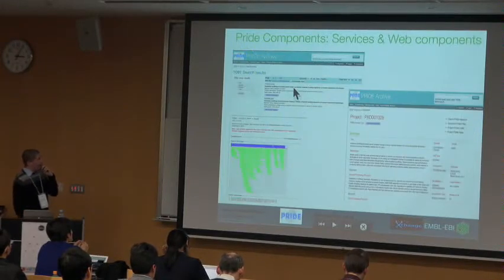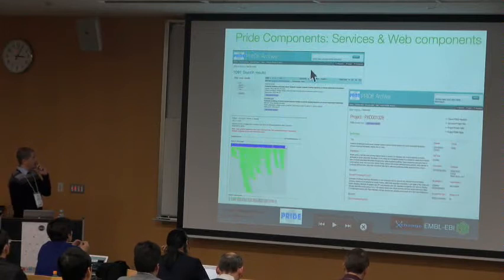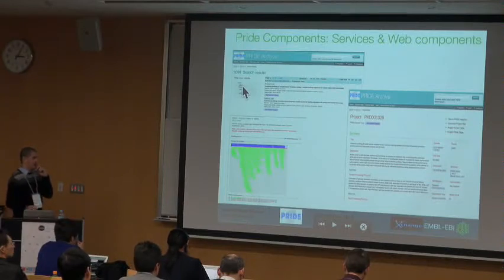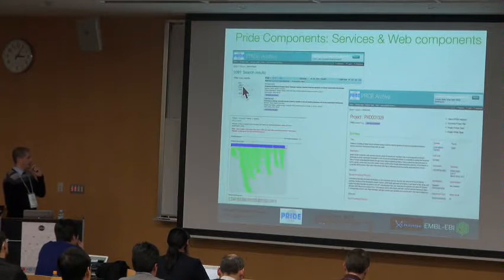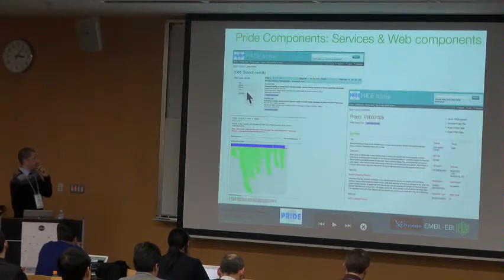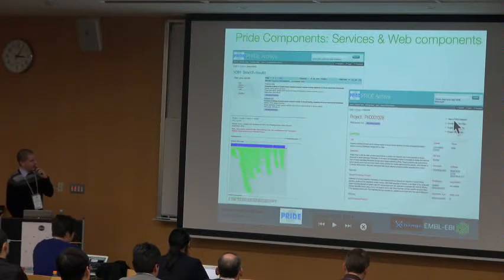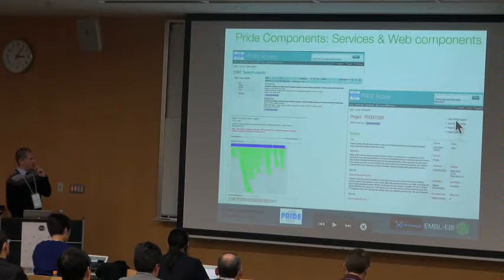This is how PRIDE looks right now. The main page is a search page where you can see all experiments in PRIDE and search by different fields such as species, cell type, and other features. You can navigate to a project. If it is a partial submission, you will not have results information, but if it is a complete submission, you can download PRIDE-Inspector and view the results.